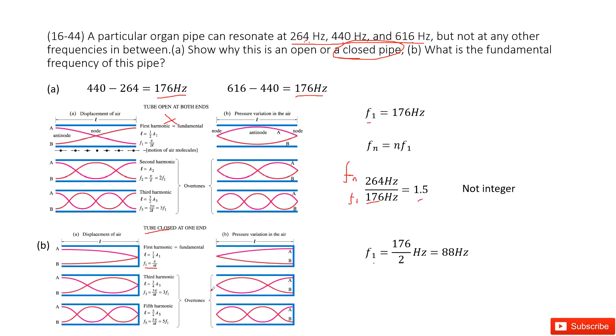This is F1. The third harmonic—these are the odd numbers. There's no F2, just F3 and F5. The difference: F3 minus F1 equals 2F1, and F5 minus F3 equals 2F1. So the difference between consecutive harmonics is 2F1. Therefore, F1 is the difference divided by 2, which is 88 Hz.